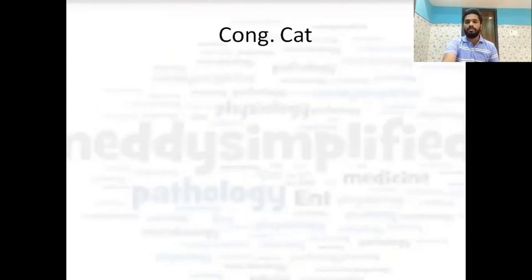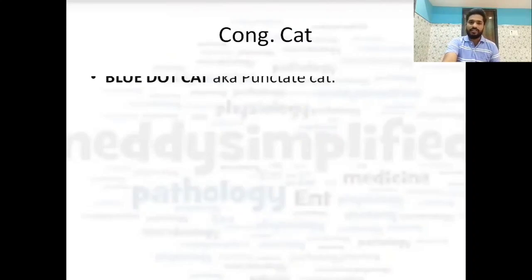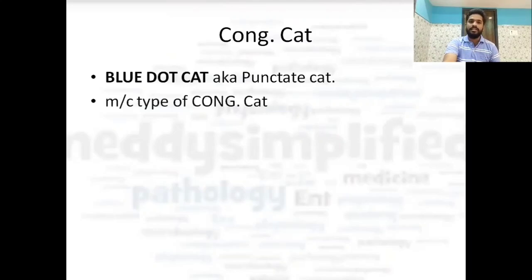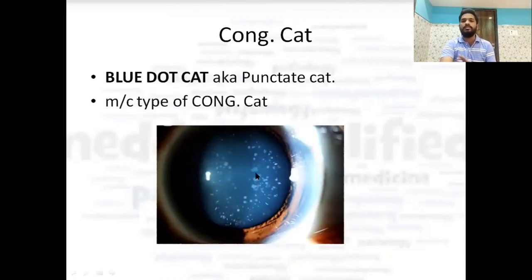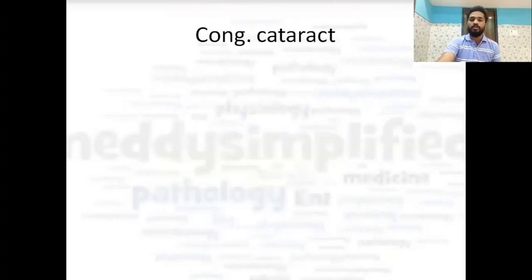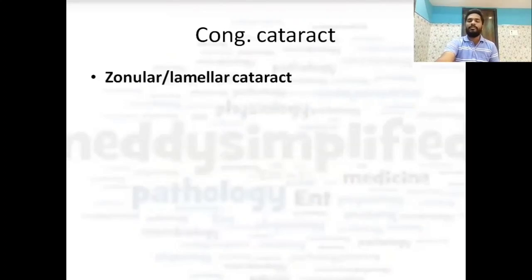In congenital cataract, the most common type is blue dot cataract, also known as punctate cataract. This is how a blue dot cataract looks — the blue dot is very evident. If such an image comes in an exam, you can surely mark the answer correctly.